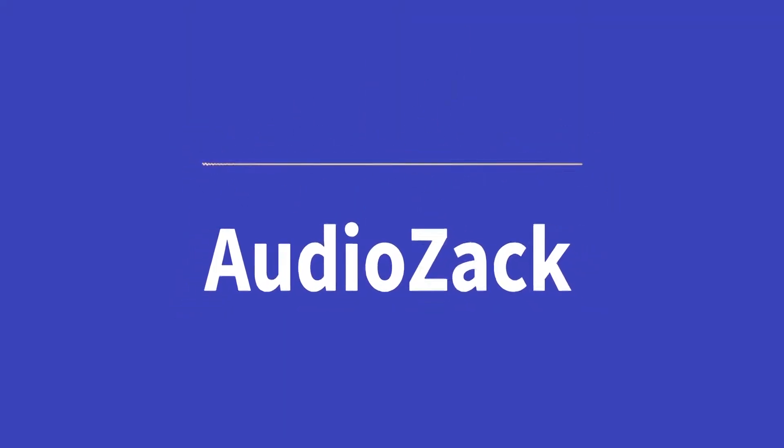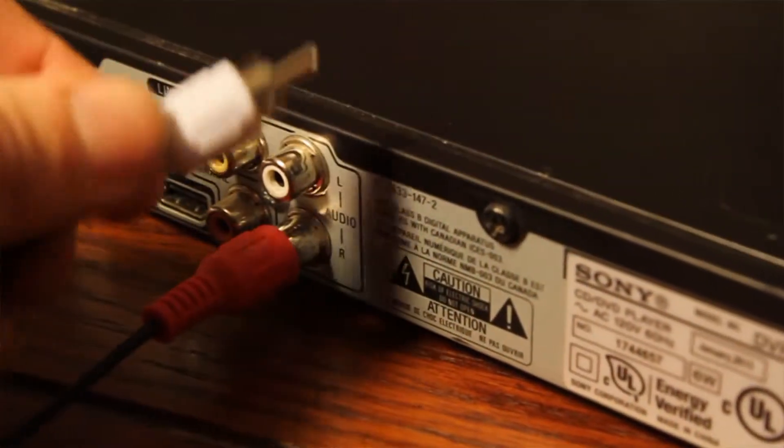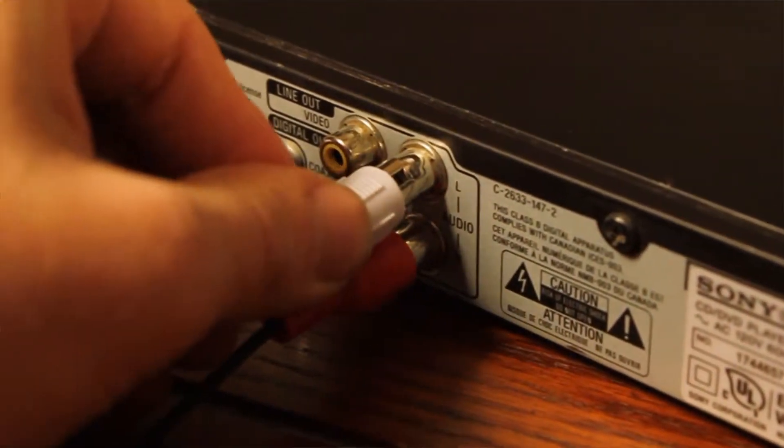Welcome back to the series about why there are so many types of audio cables. This episode explains why XLRs exist and why they're your best friend. I'm AudioZach and this channel covers audio topics for beginners. The last episode featured RCA cables which became common in the 1940s.